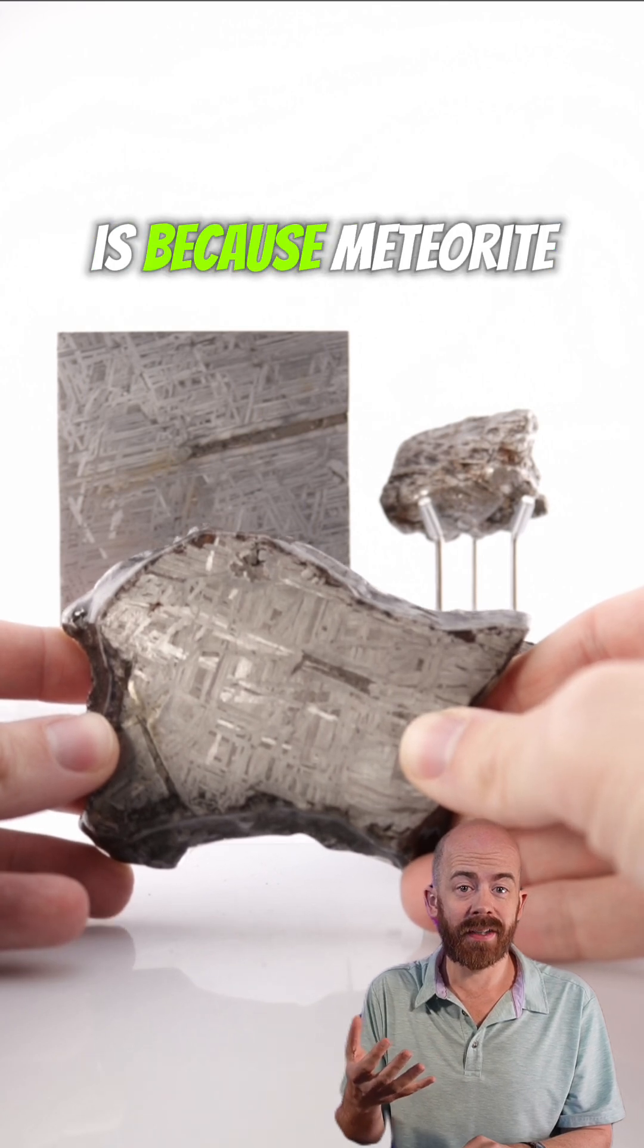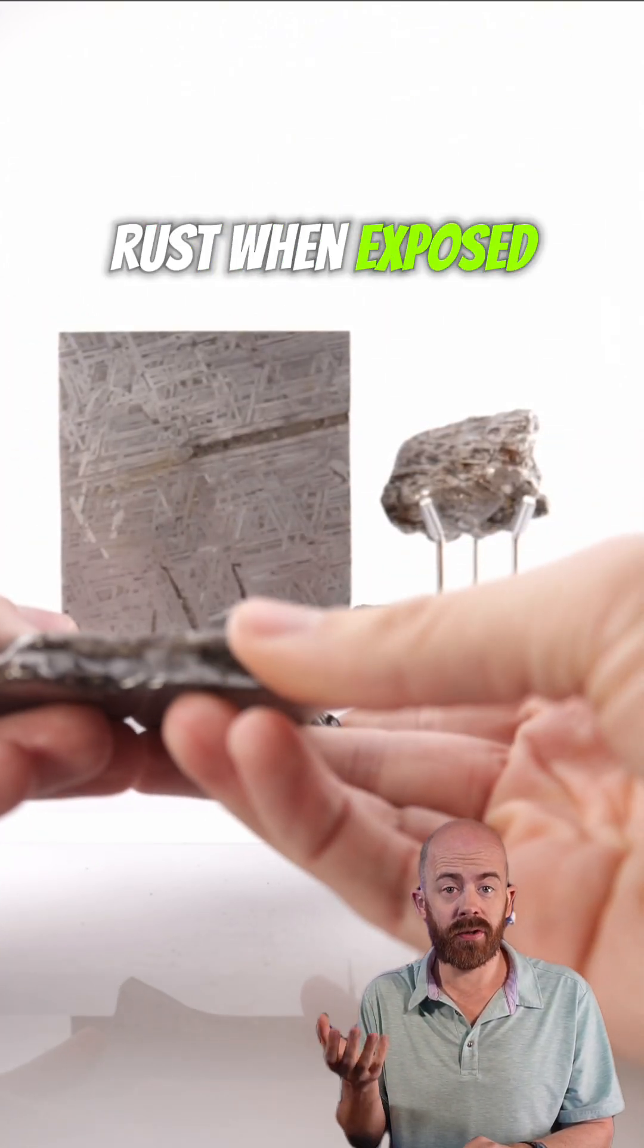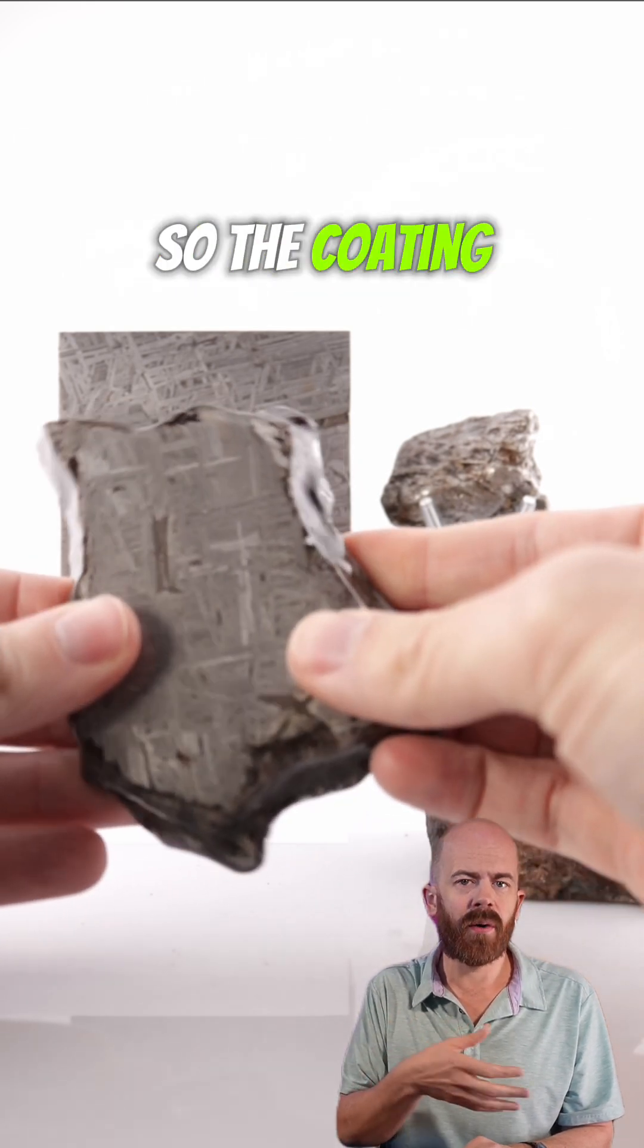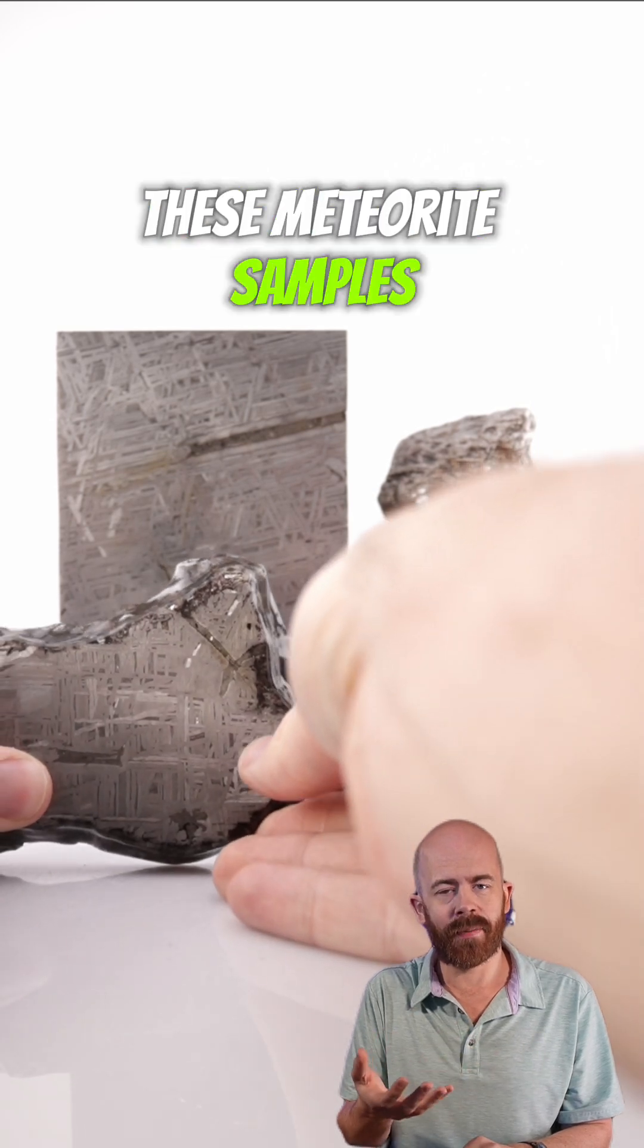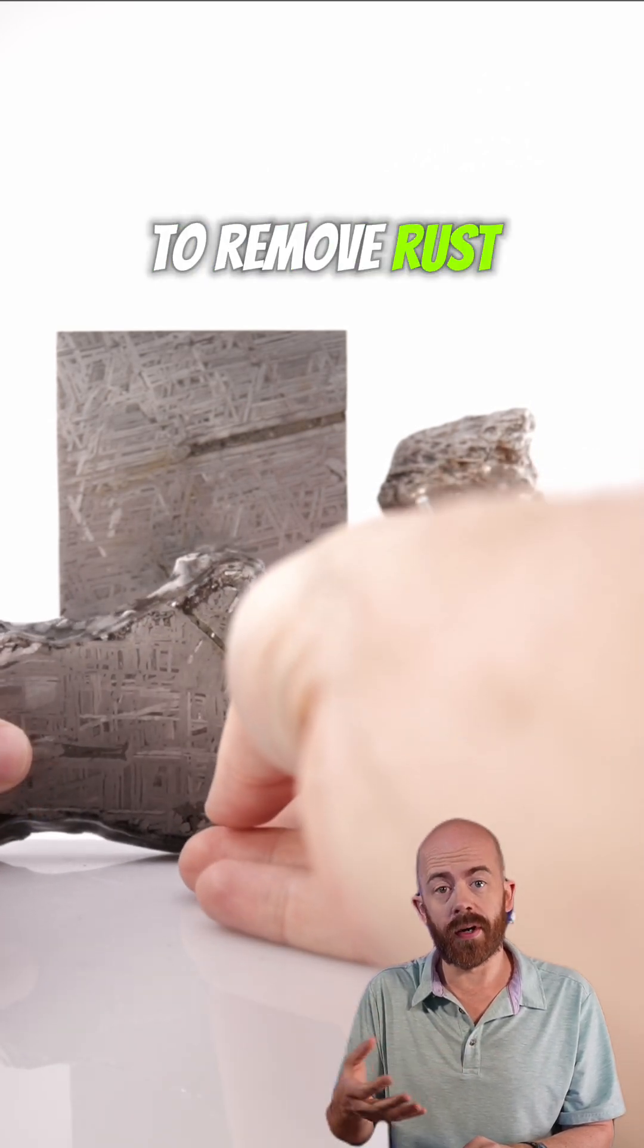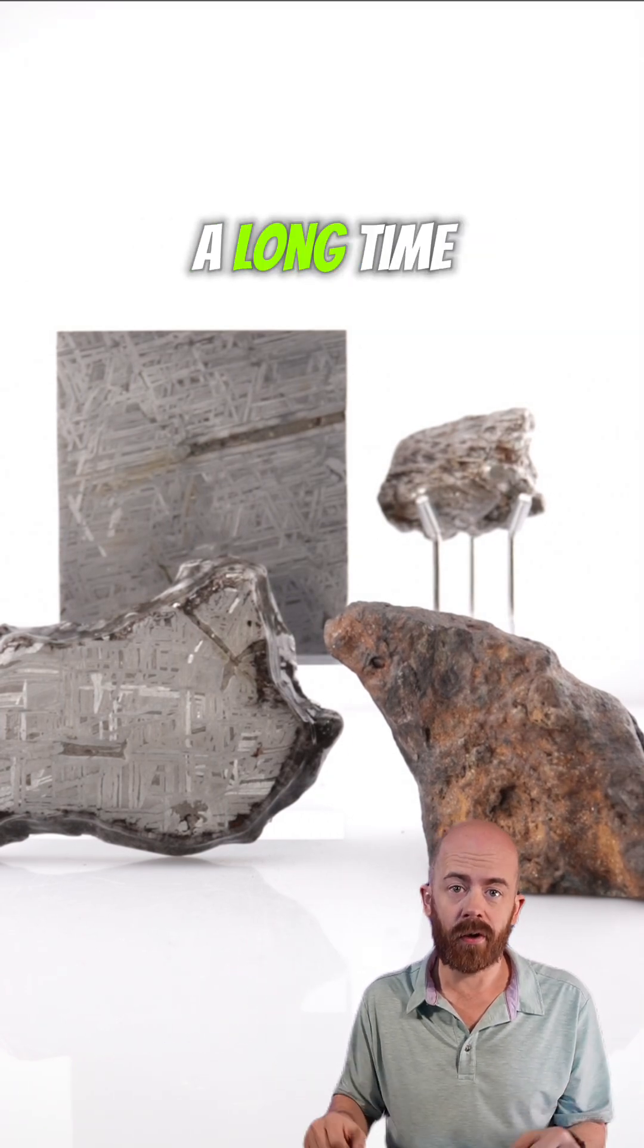One of the reasons you'll see that is because this meteorite is iron and nickel, and it will rust when exposed to humidity and oxygen. So the coating can prevent that rust from happening. Otherwise, we do treat these meteorite samples every now and then to remove rust and preserve them so they're here and available to us to study and enjoy for a long time.